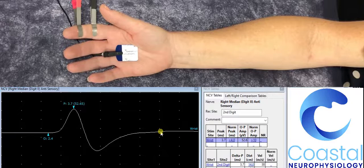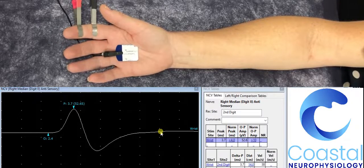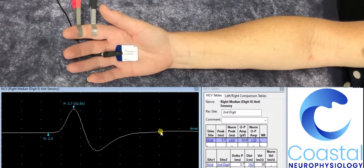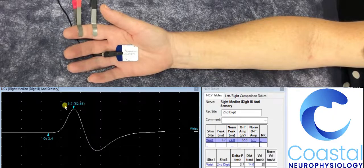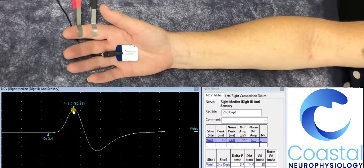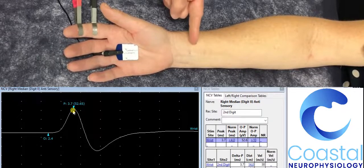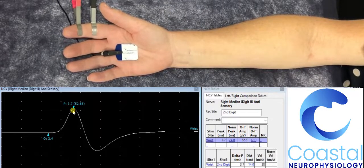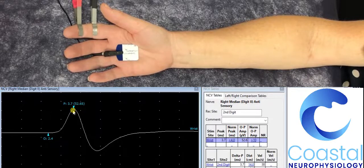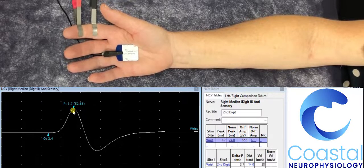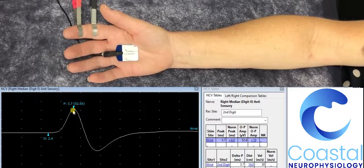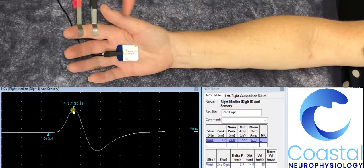Now there are two main features which I am interested in in this waveform. One which is marked by the letter P, which stands for peak. This is the peak of the electrical signal as it traveled from the wrist to the electrode on the finger. You will see the number 3.7 next to it. This tells me that the signal took 3.7 milliseconds to travel from the wrist to the finger.